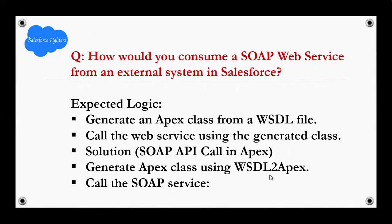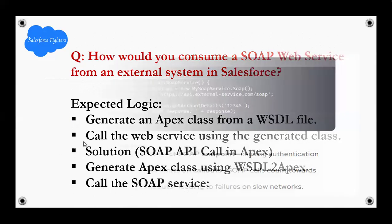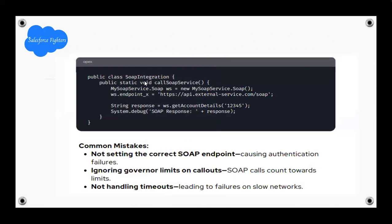Solution — SOAP API call in Apex: generate an Apex class using the WSDL, then call the SOAP service using a public class for SOAP integrations. Common mistakes: not setting the correct SOAP endpoint, missing authorization causing failures, ignoring governor limits on callouts — SOAP calls count towards the callout limit — and not handling timeouts, leading to failures on slow networks.